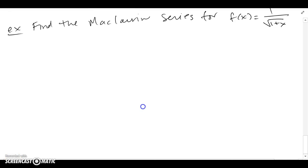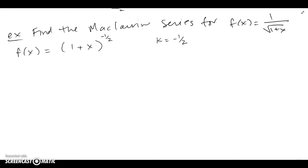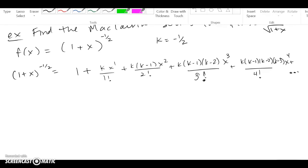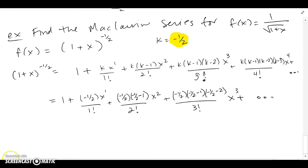Now let's write the Maclaurin series for 1/√(1+x). I can rewrite this as (1+x)^{-1/2}, giving k = -1/2. I'll apply the binomial series formula: k, then k-1, k-2, and so on, substituting k = -1/2 into each factor.